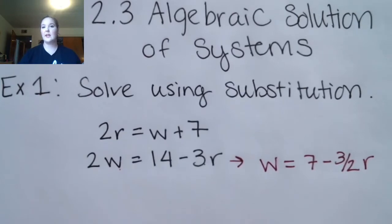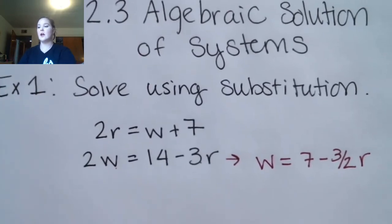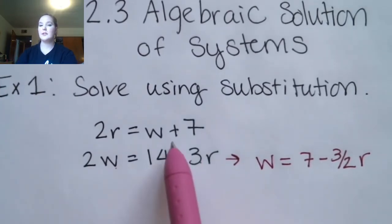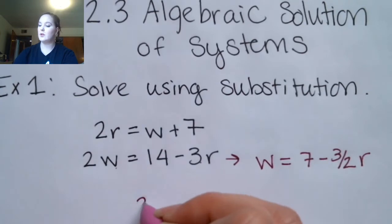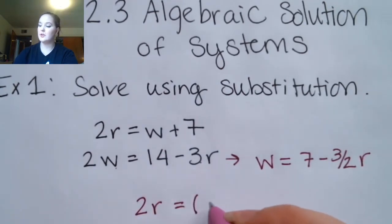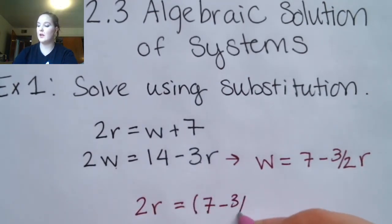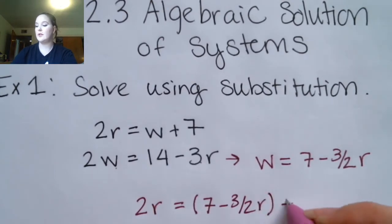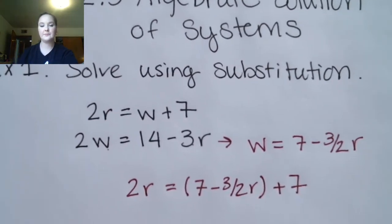Like the name suggests, I am going to substitute into this equation for W. So I have 2R equals W, which is 7 minus three-halves R, plus 7.